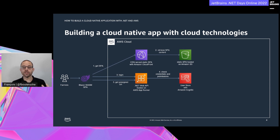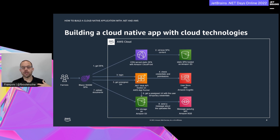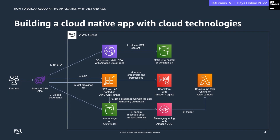With AWS App Runner you just have to build your containerized web API and ask the service to run it, handling the load balancer and the scaling of container instances for you. The backend-for-frontend API will check credentials and permissions against Amazon Cognito as our user store. Once the farmers are logged in, we retrieve a pre-signed URL from Amazon S3 so that farmers can directly upload documents to S3 without going through the BFF API. Once the file is uploaded, Amazon S3 sends a message to an Amazon SQS queue for further processing. Amazon SQS then triggers a background task running on AWS Lambda - our serverless function service.